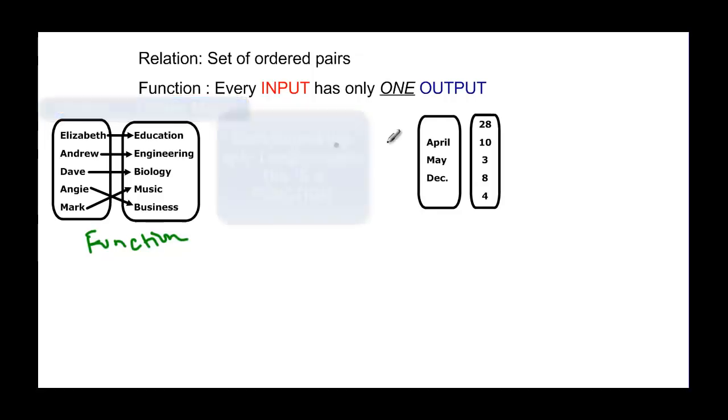When we come over here to this other example, this is the birthday month and this is the birthday day. In my family, one of us has a birthday on April 28, one of us has a birthday on May 10, one of us has a birthday on December 3, another one of us has a birthday on April 8, and one of us has a birthday on May 4.